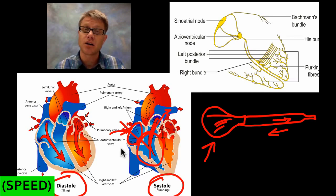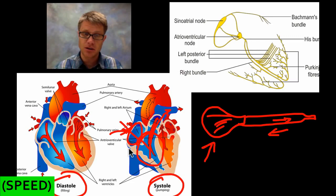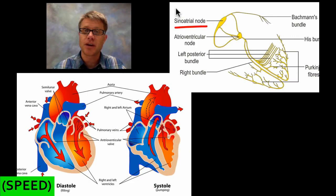What you hear in a heartbeat comes from the contraction of the atrium and then the contraction of the ventricle. The ventricle is more powerful because it has to push blood to the lungs or all the way to the rest of the body. There is much more muscle in the ventricles than in the atria, and significantly more on the left side since it has to push blood around the entire body.